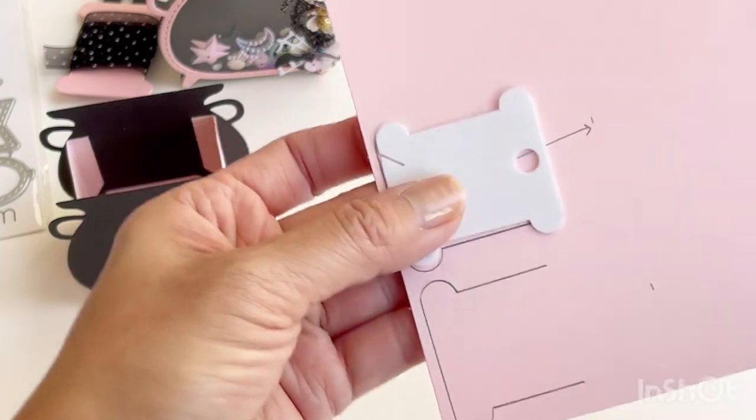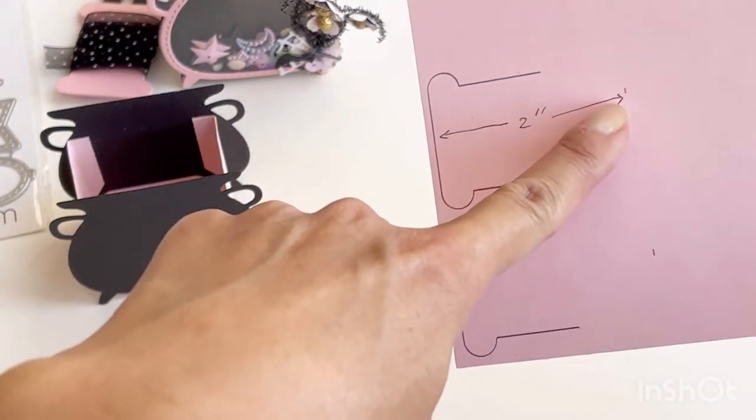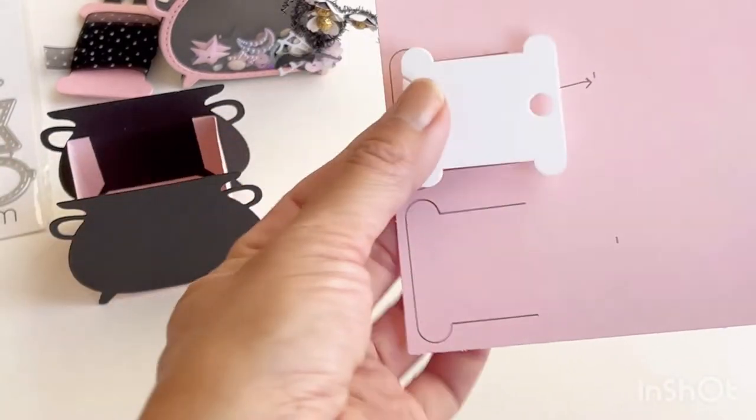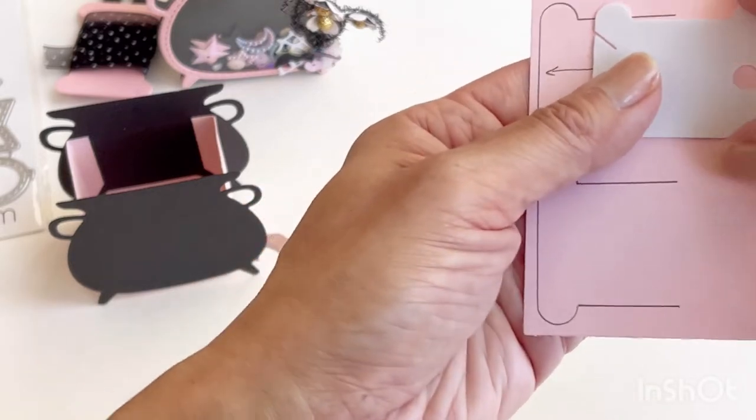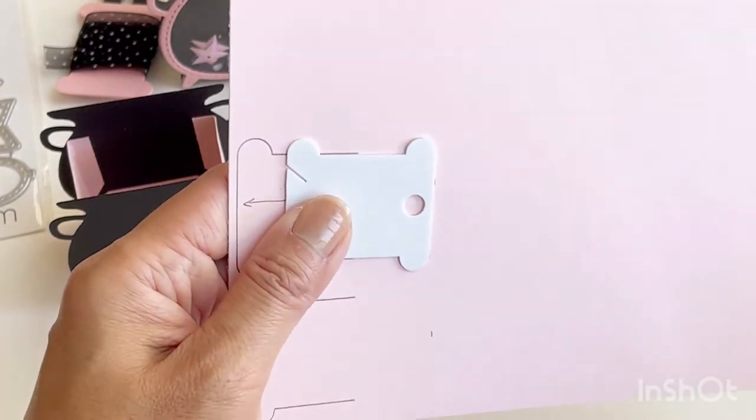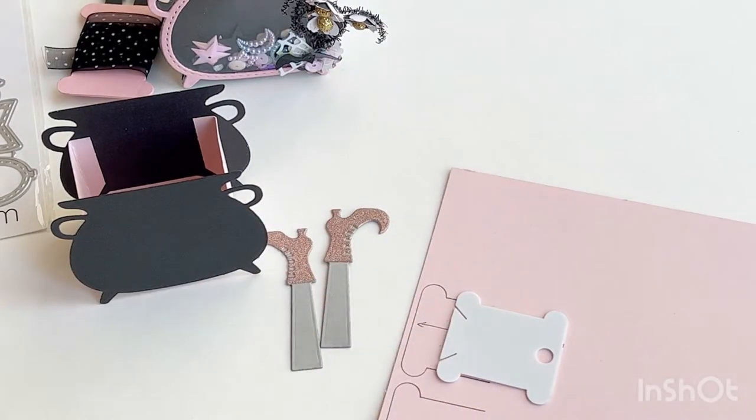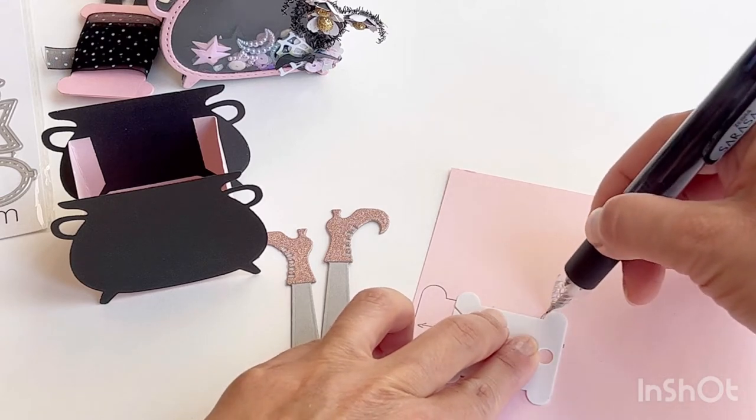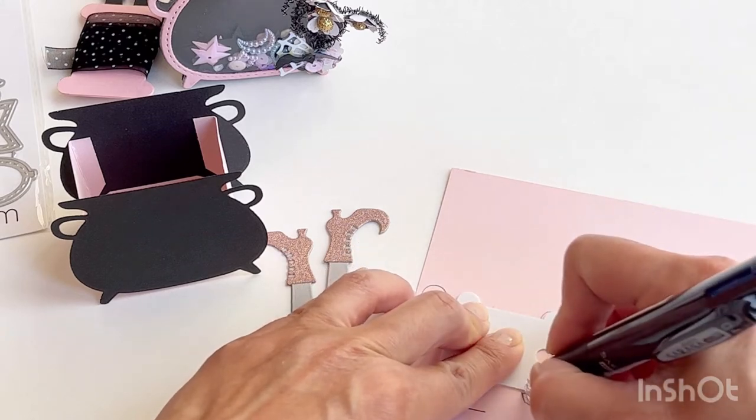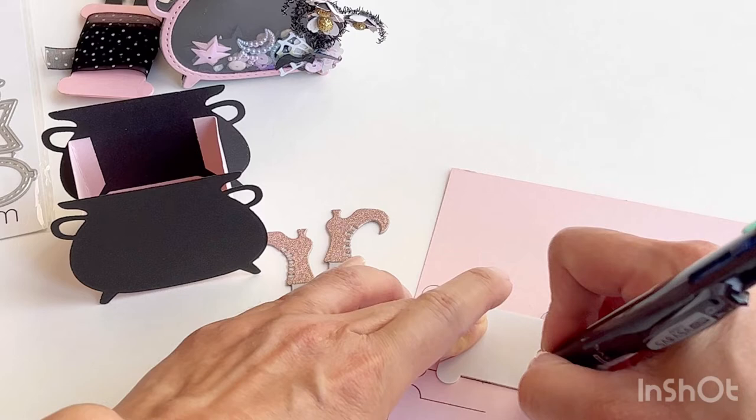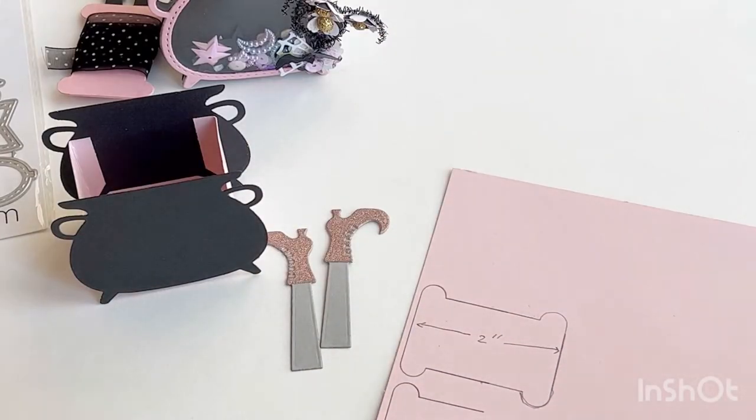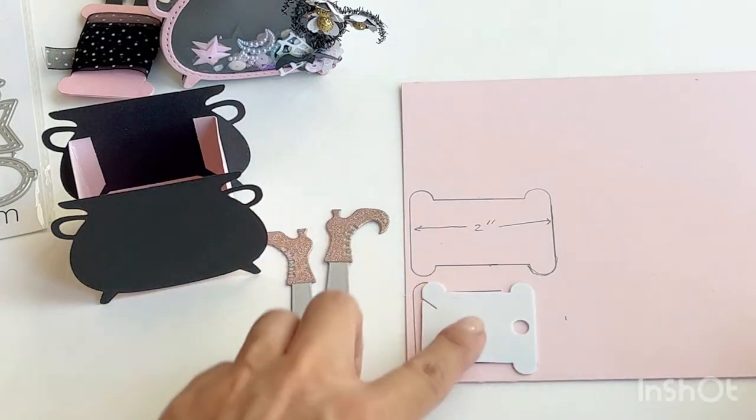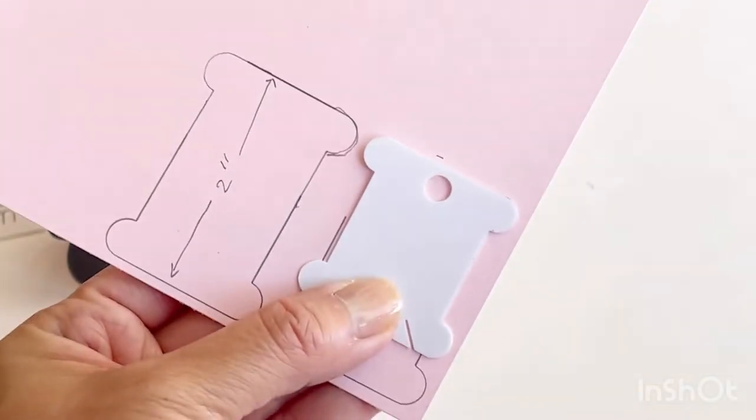I used a ruler and kind of marked where the two inch mark would be for this bobbin, and then all I'm gonna do is trace this other side, kind of just using what I had already traced as a guide mark. Again, not an exact science, just do your best to get that drawn out. I've also done the same, marked the two inch mark with a little pencil mark there, and I'm just going to try to line it up.